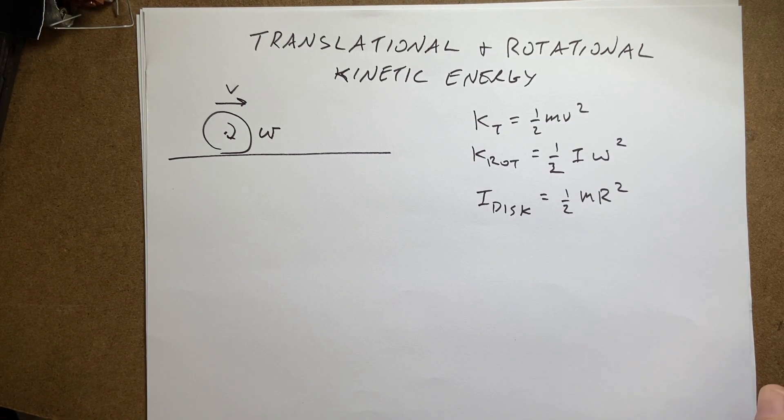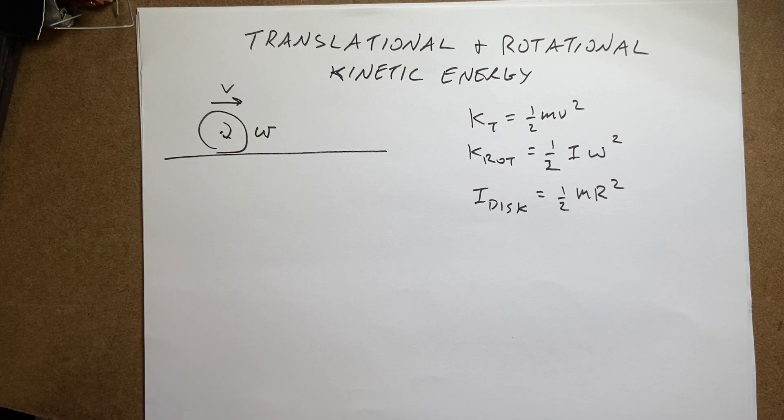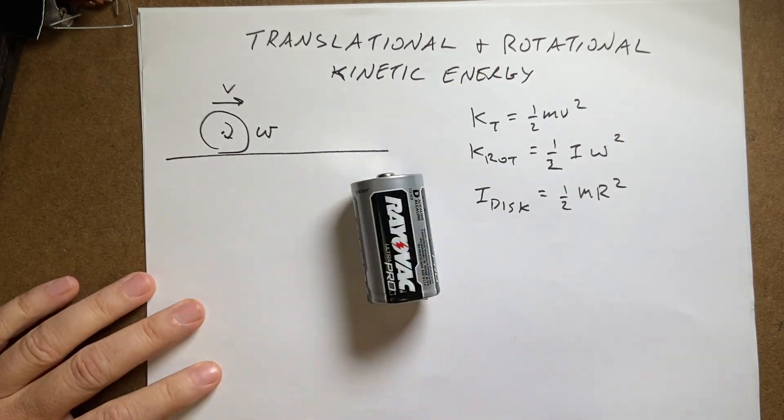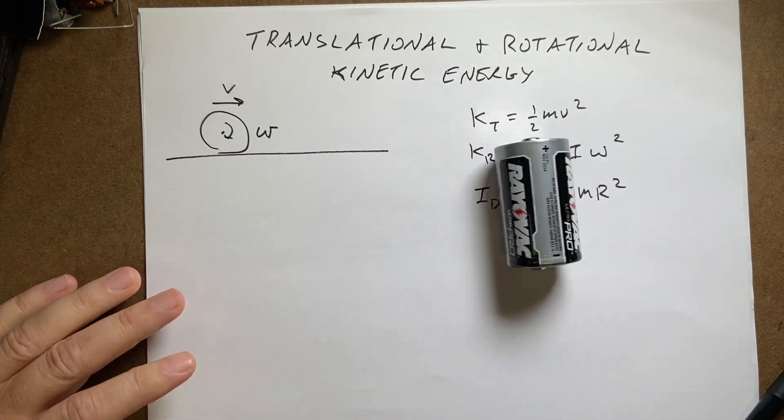Okay, so here's an example looking at translational and rotational kinetic energy. So this is a battery. I don't know if you can tell it's a battery. Imagine that battery is rolling along like that.